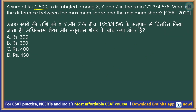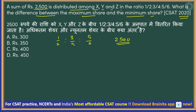Next — a sum of ₹2,500 is distributed among X, Y, and Z in the ratio 1/2 : 3/4 : 5/6. What is the difference between the maximum share and minimum share? This is a 2020 question — such simple questions have been asked in the exam. To solve this, since the ratio numbers are fractions, you need to convert them into whole numbers.